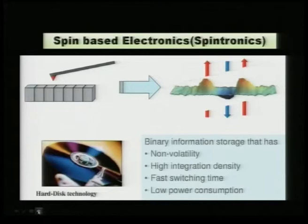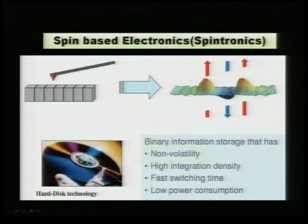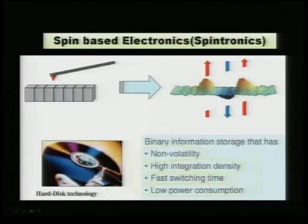Spin-based electronics can read information of domains by looking at the spin orientation. Depending on the spin orientation, you can have binary information storage with non-volatility, high integration density, fast switching time, and low power consumption. All these are advantages for spin-based electronics which are absent or costly in the regular semiconducting industry. For this reason we need to look at new possible avenues for wider applications involving organic spintronics.